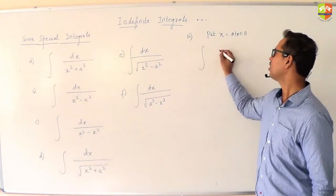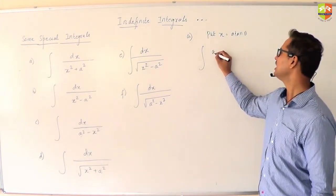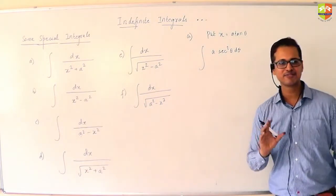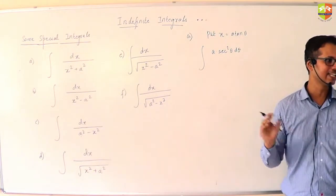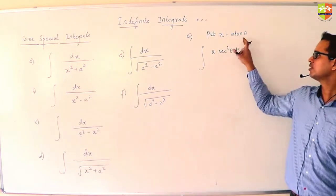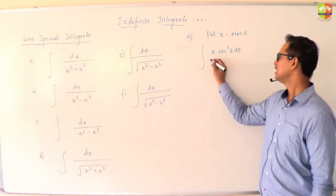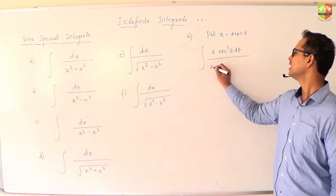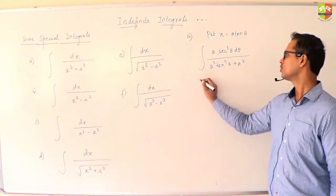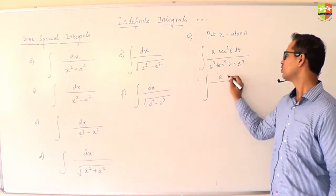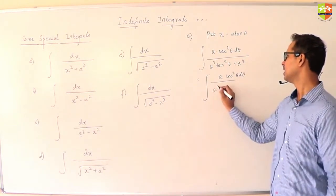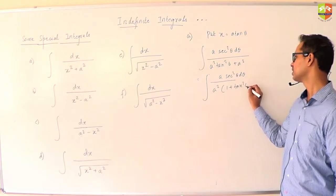So it becomes integral of dx will become a sec squared theta d theta. By this time you would have experienced that whenever tan theta is substituted, dx will become a sec squared theta d theta. In the denominator you will have a squared tan squared theta plus a squared.